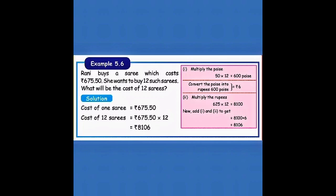Let's see the rupees multiplied by 12. 625 multiplied by 12, that is 8100. If you are multiplying 625 by 12 you will get 8100. Now we have to add the 6 rupees with 8100. You will get 8106 rupees. So the cost of 12 saris equals rupees 8106.